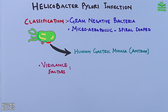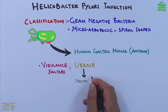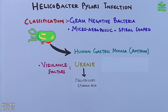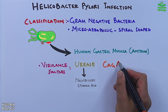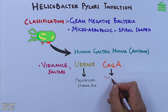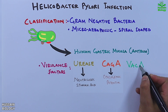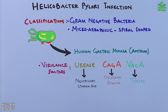Helicobacter pylori has several key virulence mechanisms that help it survive and cause disease. One of the most important is the urease enzyme, which neutralizes stomach acid by breaking down urea into ammonia, creating a more suitable environment for bacterial growth. Another major factor is CagA, a protein that disrupts cellular signaling and has oncogenic potential, meaning it may contribute to the development of gastric cancer.